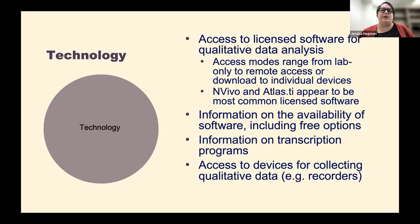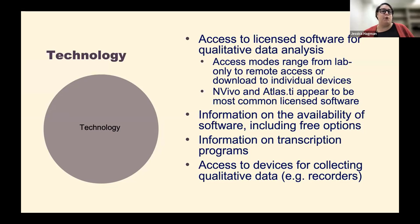On the question of technology access — we tried to get a sense of whether software was available in a library lab or whether you could download it onto your own device. It varies hugely. Most institutions, if they have software, seem to offer NVivo or Atlas.ti, but there wasn't a lot of consistency in how it would be accessed. Sometimes remote access was available. Sometimes you could find information on free options like TAGUETTE, transcription programs, or in a few cases, access to devices you might need for collecting qualitative data.